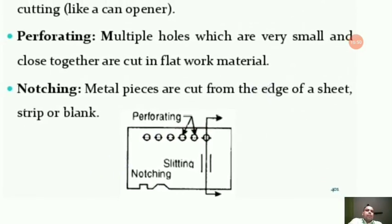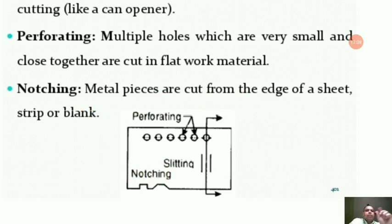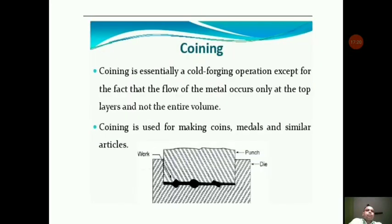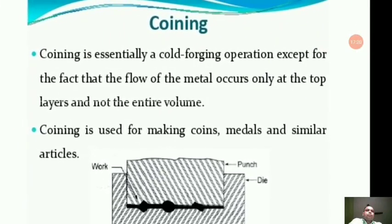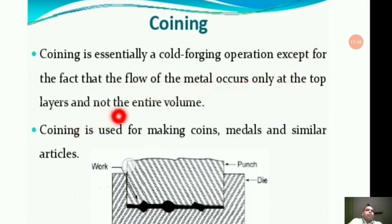Notching: metal pieces are cut from the edge of a sheet, strip, or blank — when you are cutting or shaping the edge of a sheet. Next is coining, widely used for making coins, medals, and similar articles. Coining is essentially a cold forging operation, except that the flow of material occurs only at the top layers, not the entire volume.